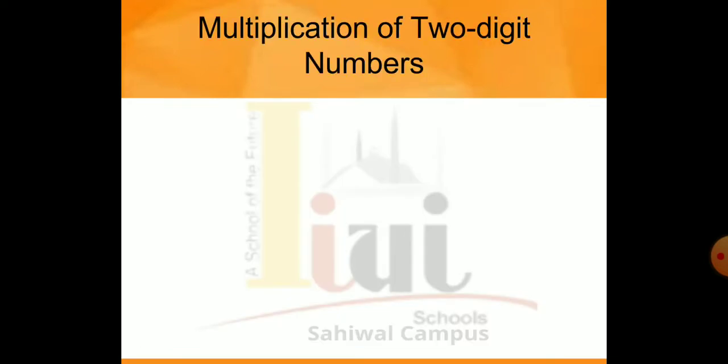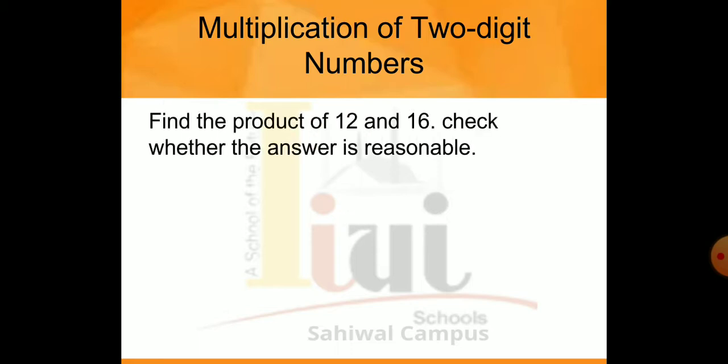Students, open your book page number 49. Our learning zone is multiplication by 2-digit number. Today we have to perform the multiplication of 2-digit numbers.